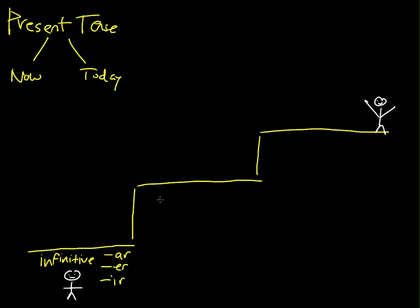The second step up this mountain is to drop the AR, the ER, or the IR. And I'm going to draw a pair of scissors. And think of the scissors to actually cut off the AR, ER, or IR. Or drop the AR, ER, IR.